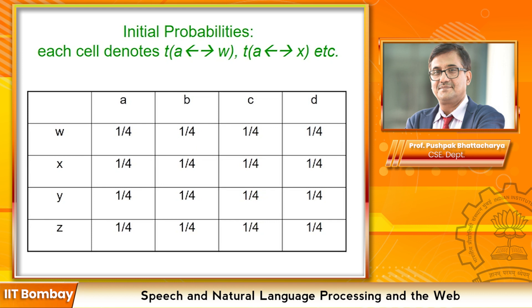The general point is that we are trying to achieve alignment between parts given alignment of the whole. So two big entities are in alignment — how to draw correspondences between the parts of these two large entities. So how to build part alignment from whole alignment.